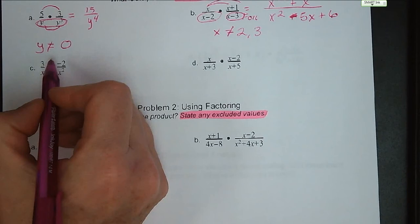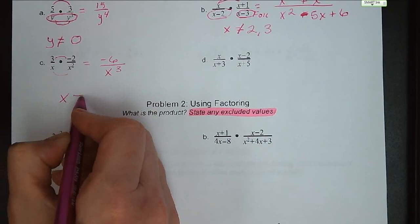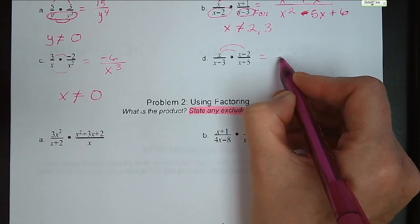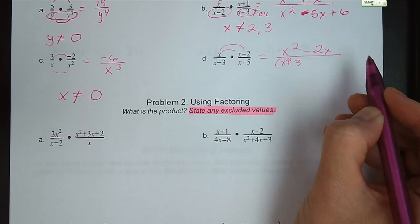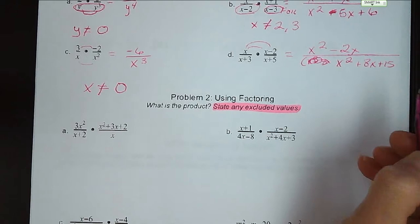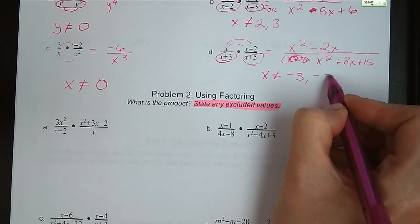You guys try letters C and D, and then we're going to go through them. Letter C: 3 times negative 2 is negative 6, x squared times x is x cubed. Our only excluded value on this one is 0. Letter D: we have x times x minus 2, that's going to give us x squared minus 2x. It's over x squared plus 8x plus 15. Our excluded values are negative 3, which would make x plus 3 equal to 0, and negative 5, which would make x plus 5 equal to 0.